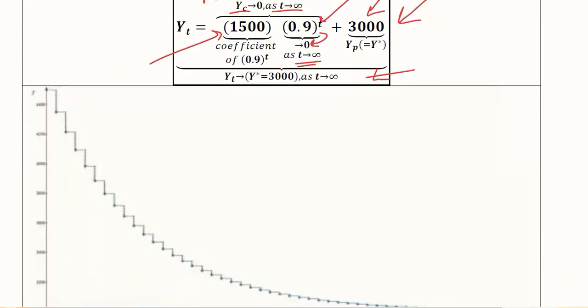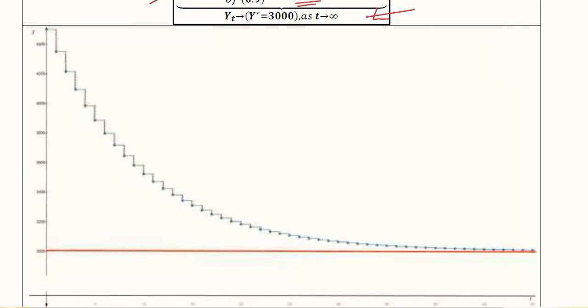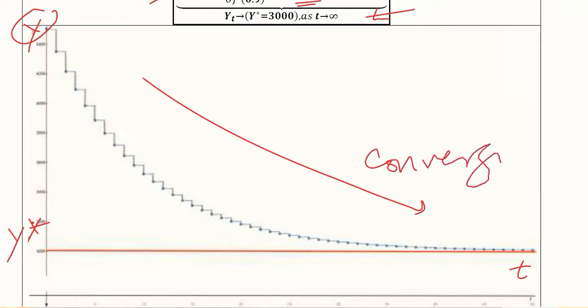You will see that we have developed a graph on which Y is plotted here and time is here. You can see it is non-oscillatory because it is above the equilibrium value and it is not moving above and below it. It is also converging towards the equilibrium, so it is fulfilling the requirement that we have for dynamic stability.